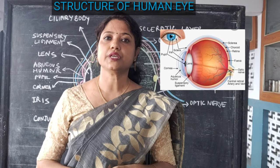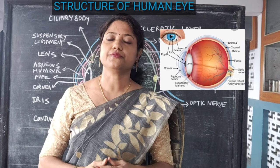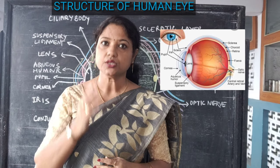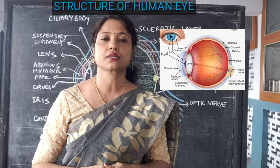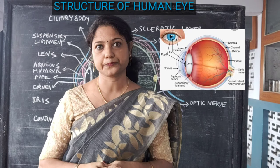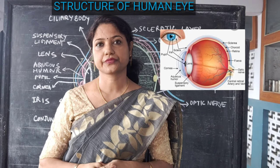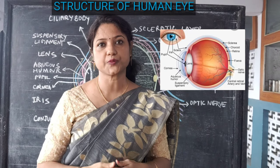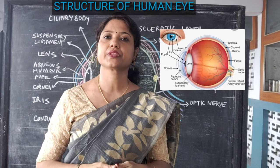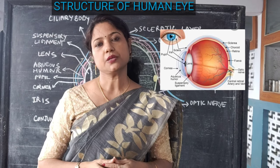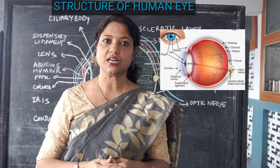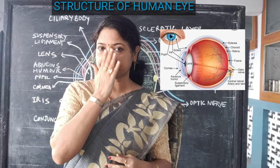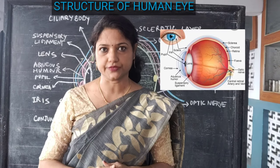Then we have a very thin layer at the top of the eye which is called the conjunctiva. This is a transparent, single layer which is present as a covering over the front part of the eye.